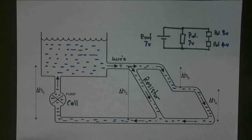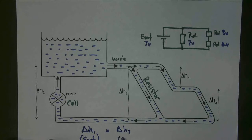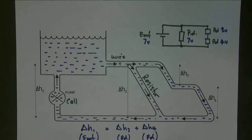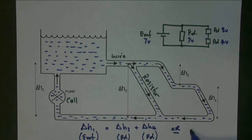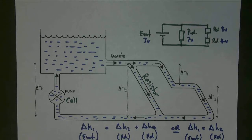So this analogy is quite nice for thinking about how voltages add up in a circuit. If we talk about the heights, then ΔH1 — which is the EMF — equals ΔH3 plus ΔH4, which are the potential differences. That gives us the voltage law: the EMF in the circuit must add up to the potential differences. It doesn't matter which route — if the water goes the other route instead, then ΔH1 equals ΔH2. The EMF still adds up to the potential differences in that particular route, so you have to consider one particular route when talking about whether voltages add up.